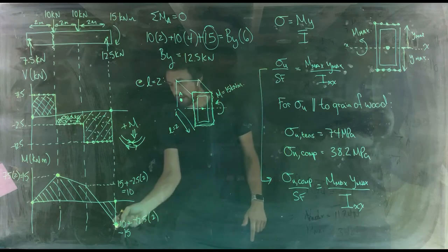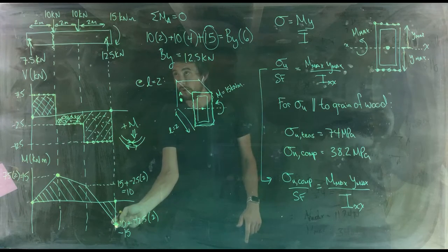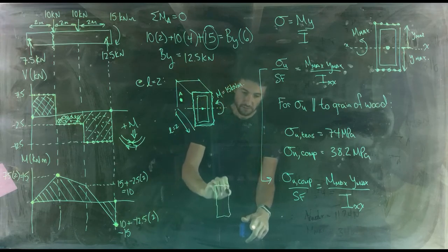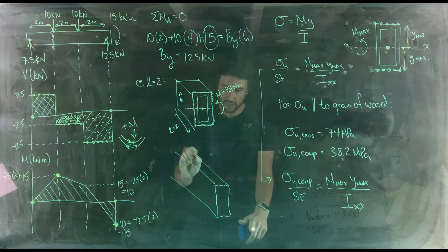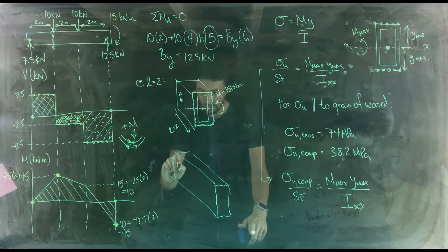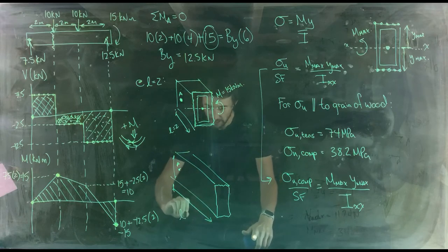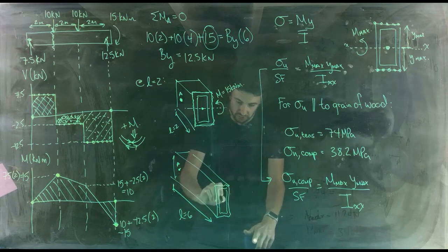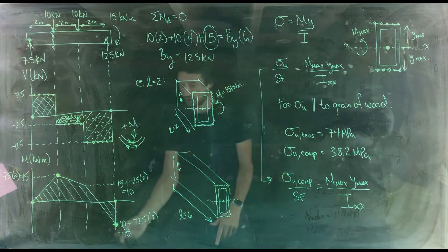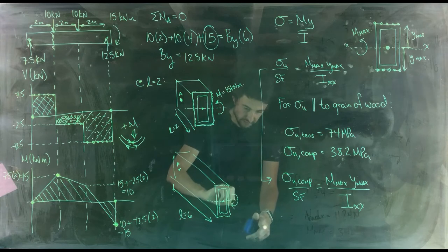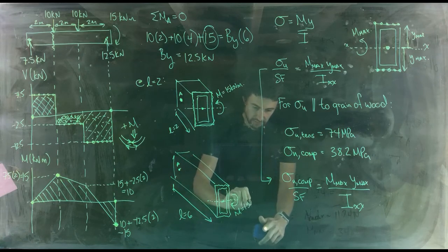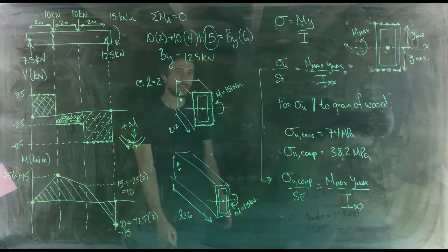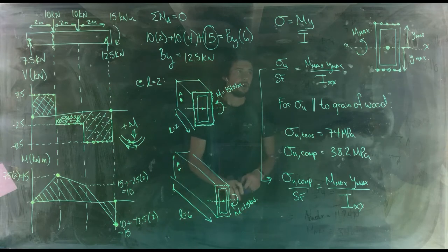At L equals 6, the maximum moment is in the other direction because it's negative. A negative internal moment places the bottom of the beam in compression and the top in tension. In both cases the moment magnitude is the same — 15 kilonewton meters — so it doesn't matter which location we use for our calculation.